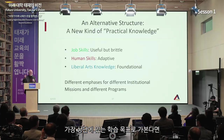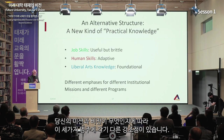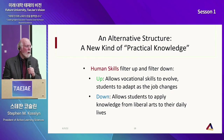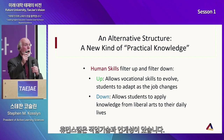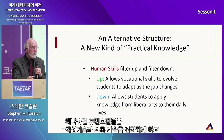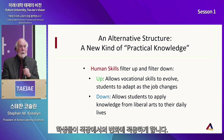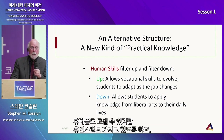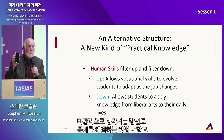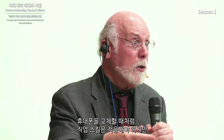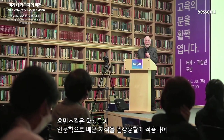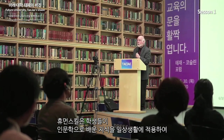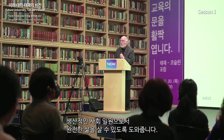Human skills are critical. I have them in the middle because they filter up and down. Human skills filter up to job skills, allowing vocational skills to evolve and students to adapt as the job changes. So when you learn to fix a cell phone but also have human skills — critical thinking, problem-solving, communication — you can adapt as phones change. But human skills also filter down, helping students apply liberal arts knowledge to their daily lives so they can be productive citizens and live full lives.